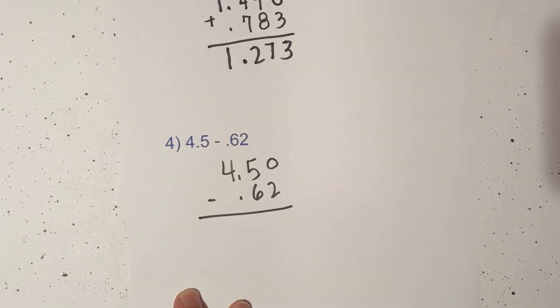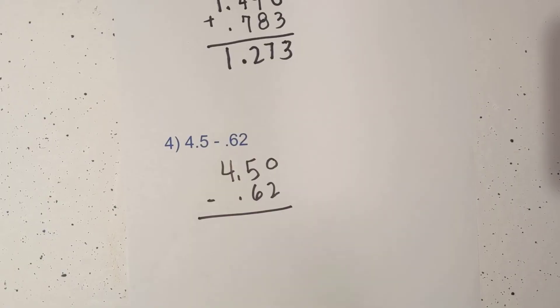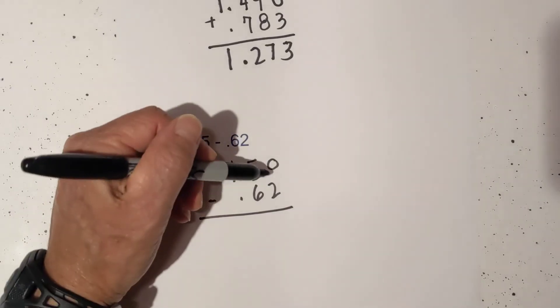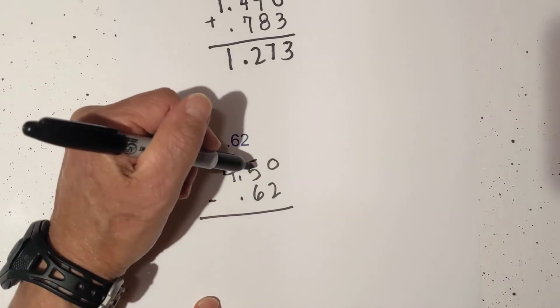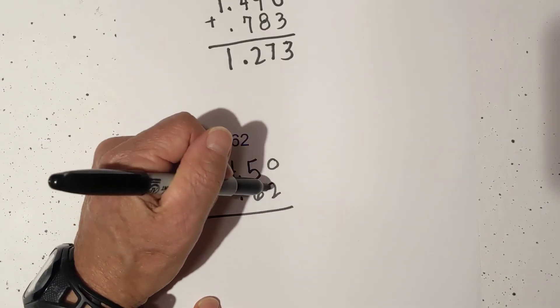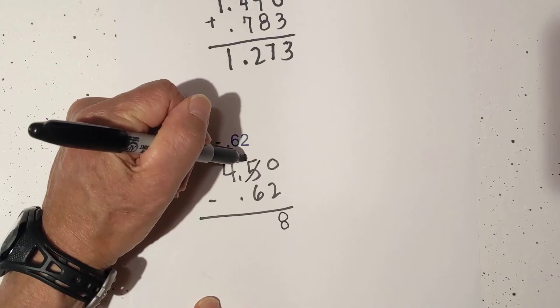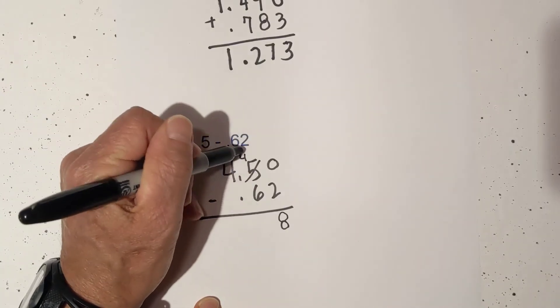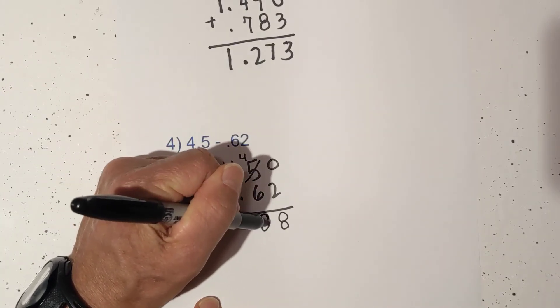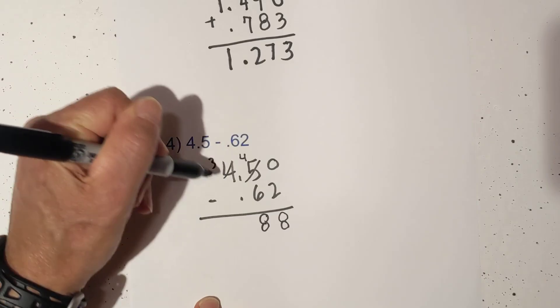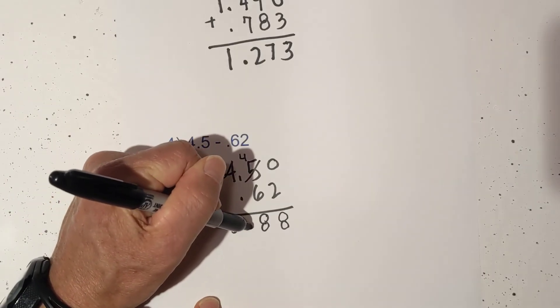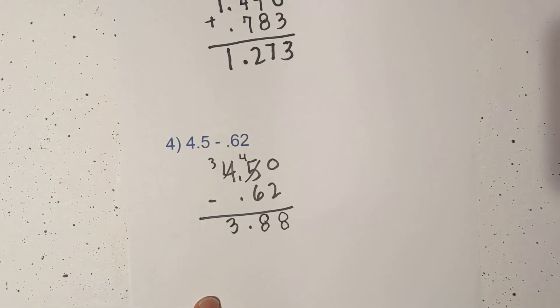we're going to subtract. Let's go ahead and subtract: 10, we're going to have to borrow 1 from the 5, 10 minus 2 is 8, we borrowed 10 here, so that is 4, 6 goes into 14, 8 times. We had to borrow 1 from here, so bring down the 3, and that becomes 3.88.